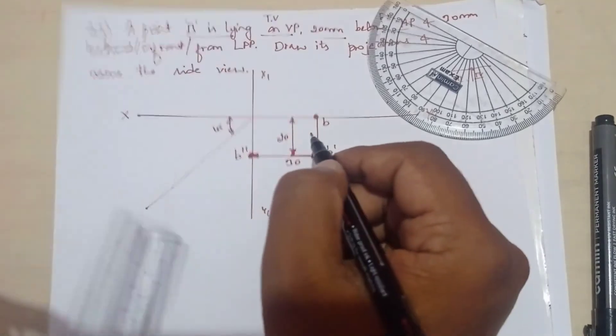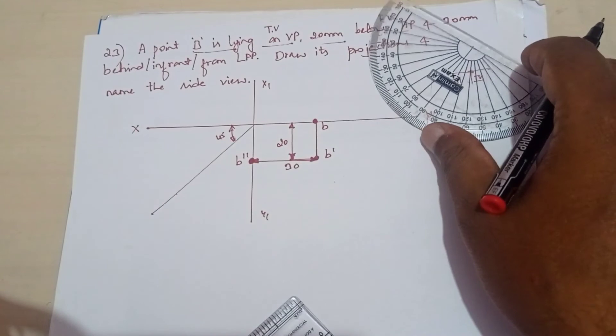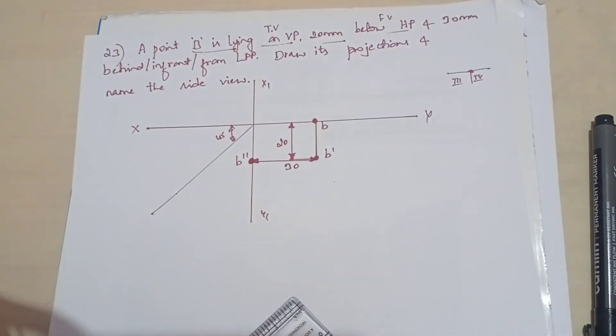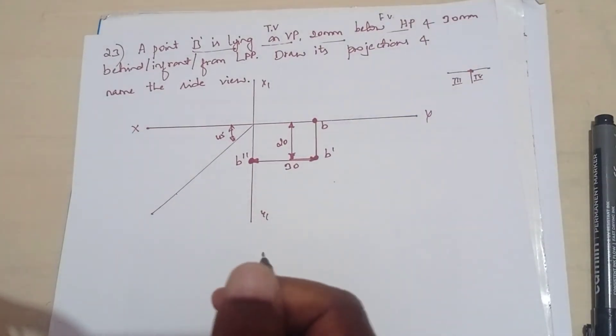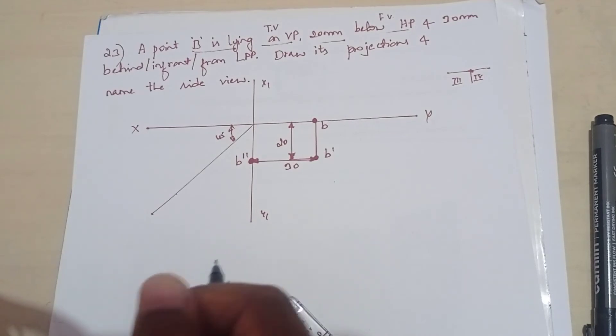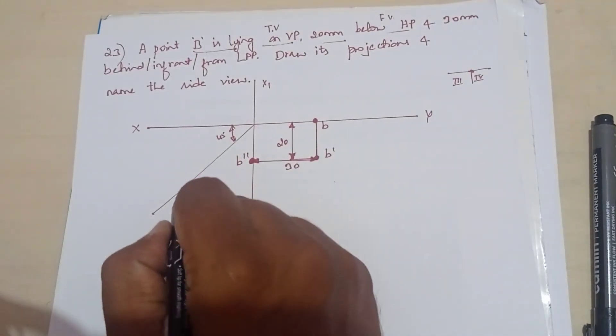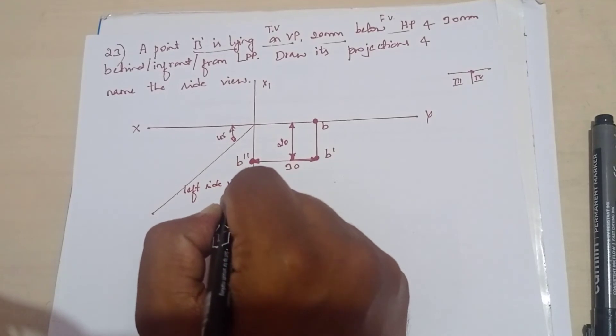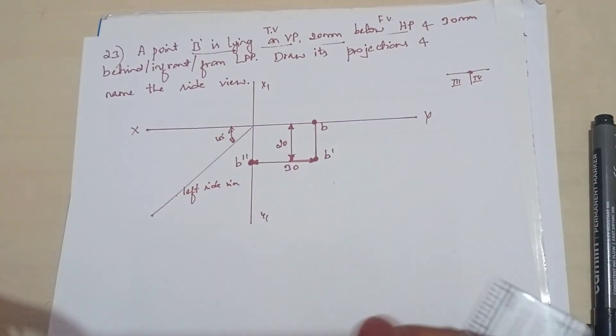Here we get B double dash. So B double dash here we're getting it. And here in this case, it is a left side view that we get. Left side view. So that completes the problem.